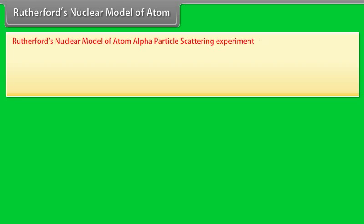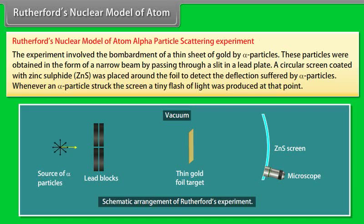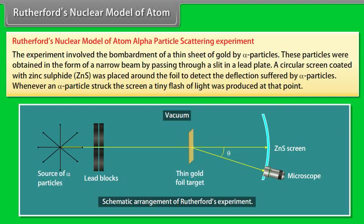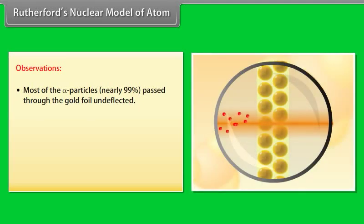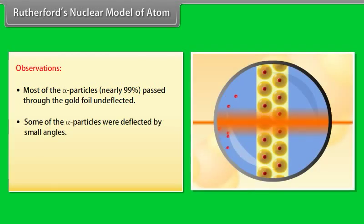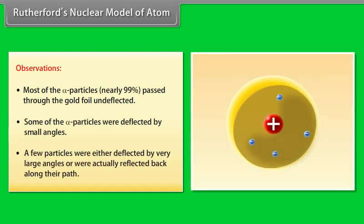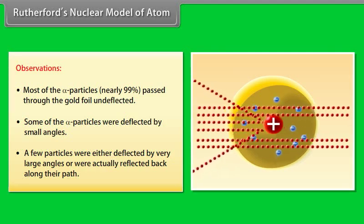Rutherford's experiment involved bombarding a thin sheet of gold with alpha particles, obtained as a narrow beam through a slit in a lead plate. A circular screen coated with zinc sulfide (ZnS) was placed around the foil to detect deflections. Observations: (1) Most alpha particles — nearly 99% — passed through the gold foil undeflected. (2) Some were deflected by small angles. (3) A few were deflected by very large angles or reflected back along their path.